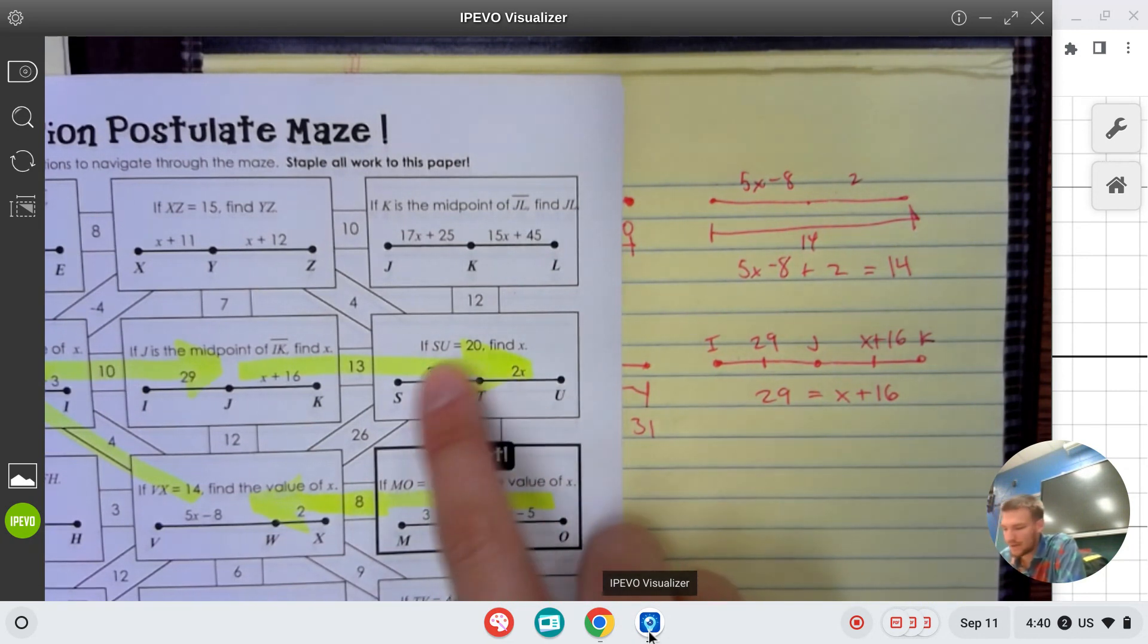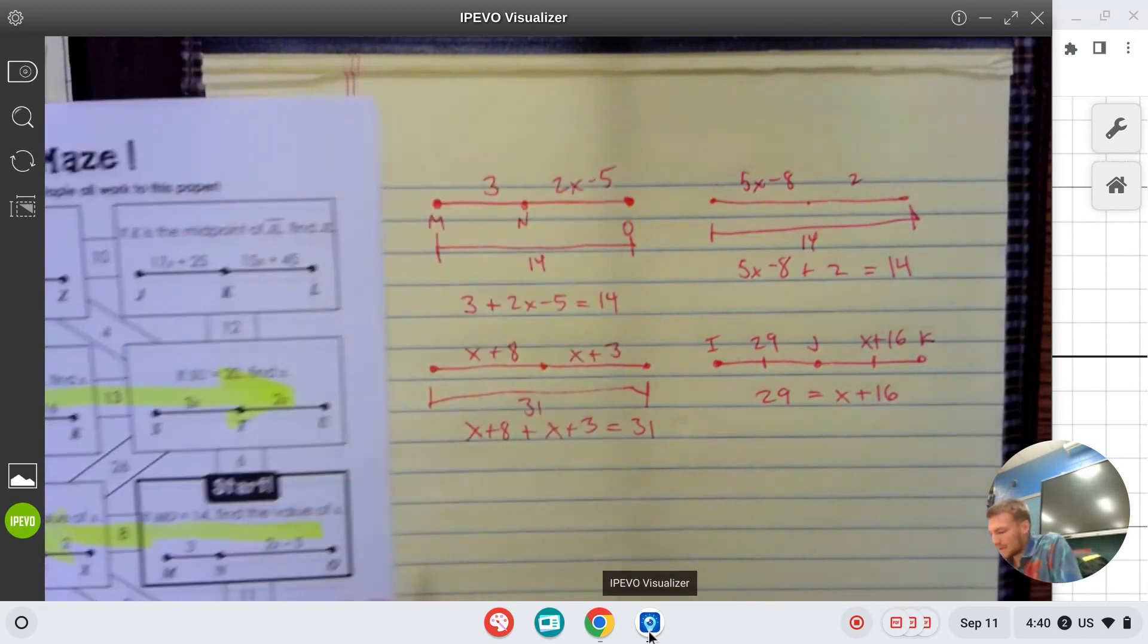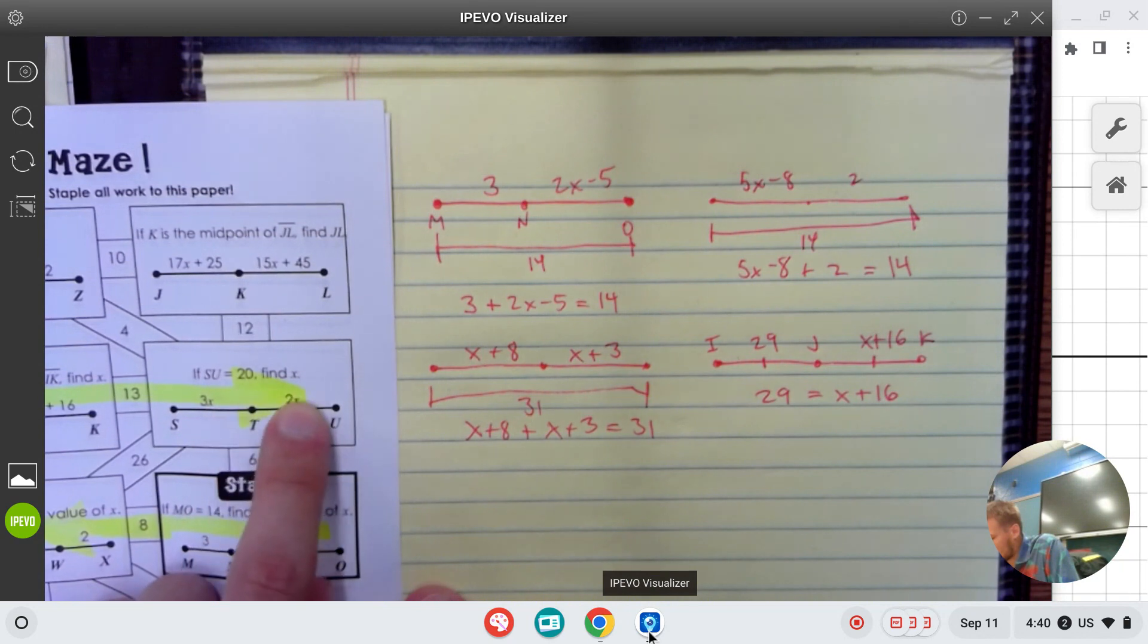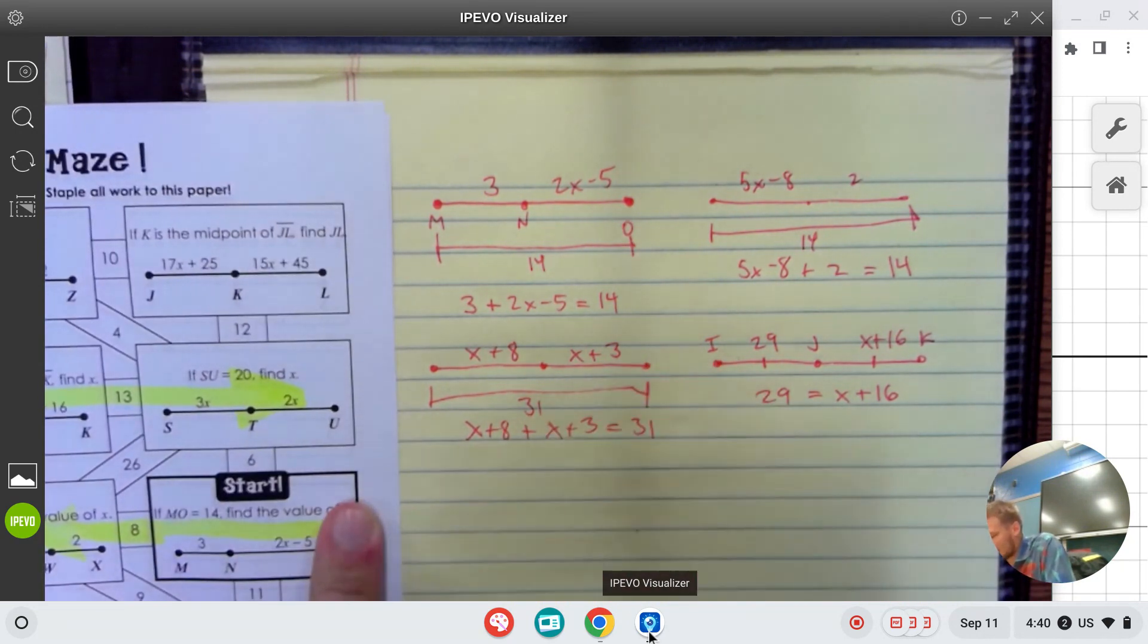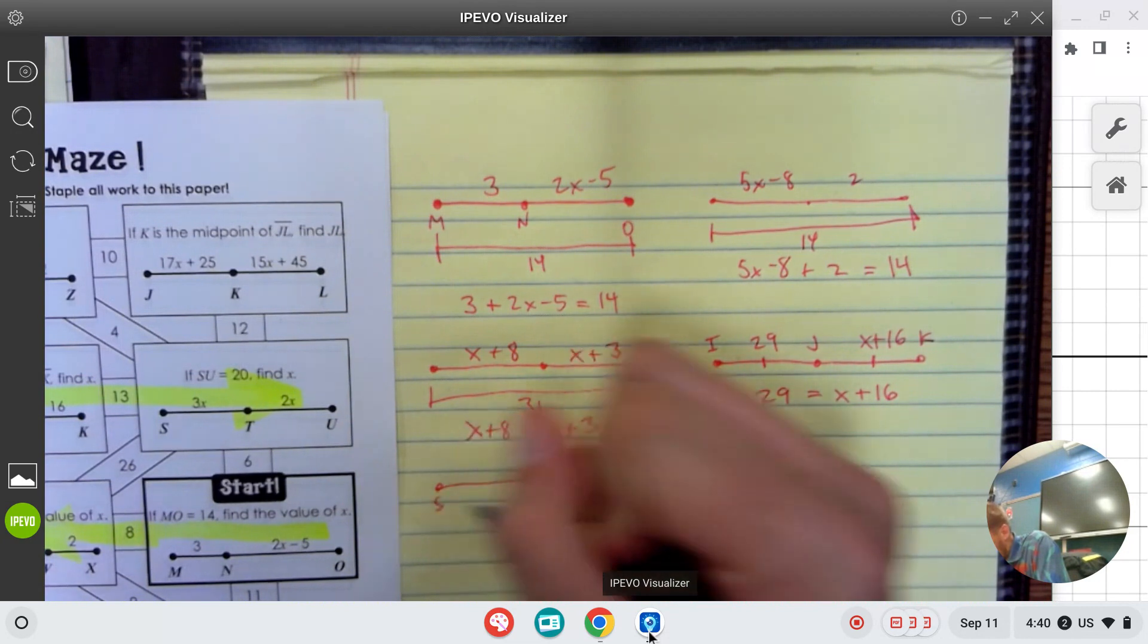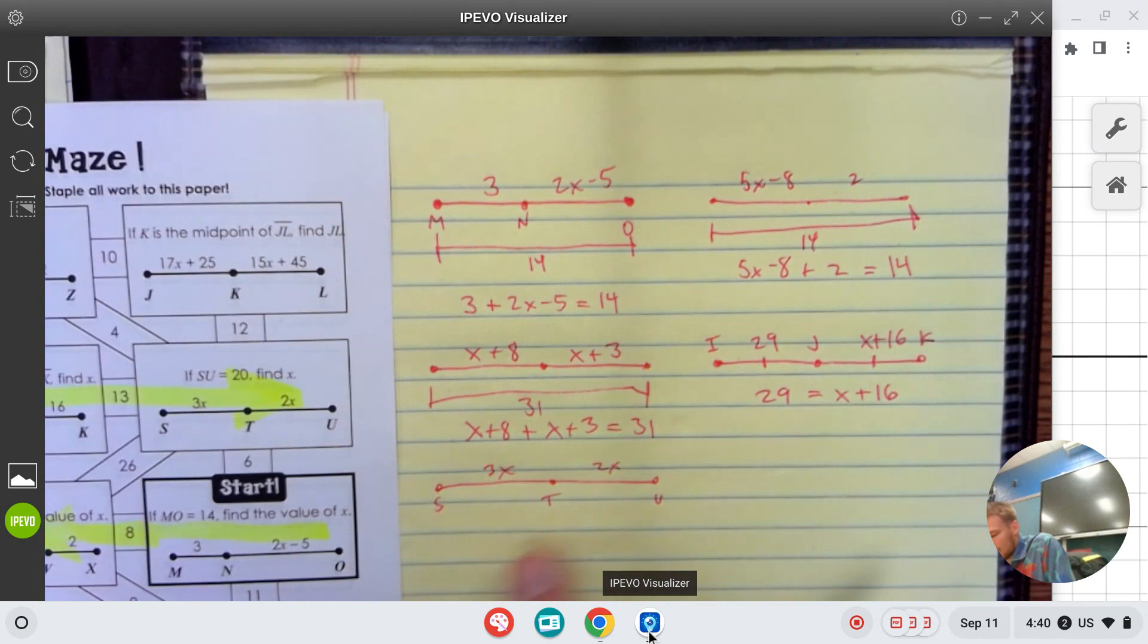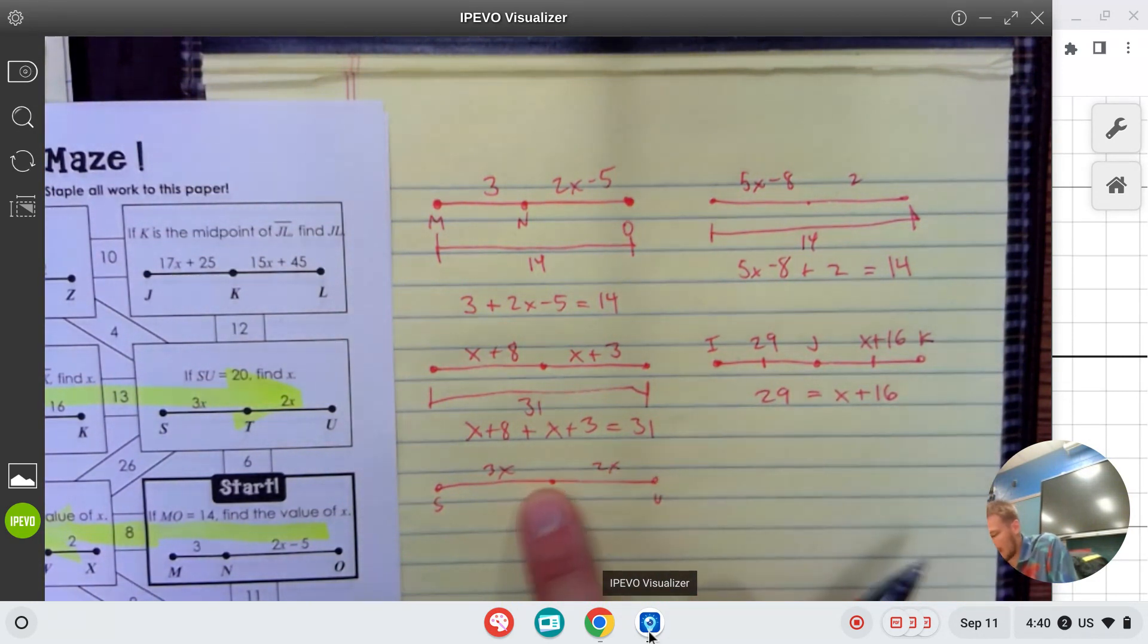We're going to want to focus on this box up here. It says if SU equals 20, find x. Again, that's the whole thing. We already talked about how to do this. This last question we'll do, I'll just write it down: STU, 3x, 2x. We cannot set it up with the midpoint because it did not say midpoint.